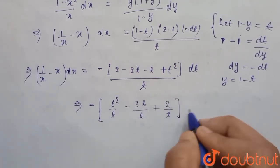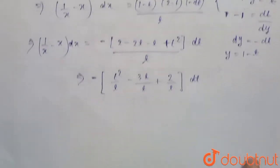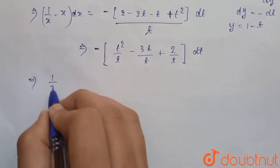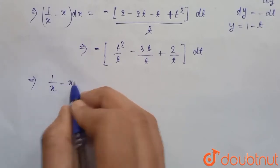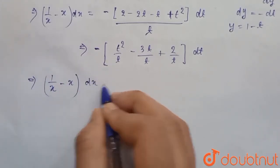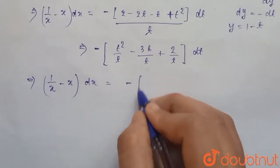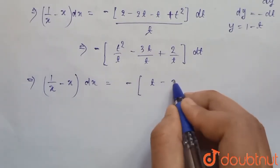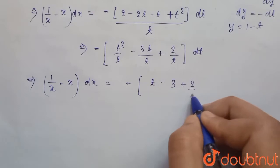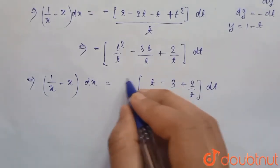Separating the fraction, we have (1/x - x) dx equals (-t - 3 + 2/t) dt. Now we integrate both sides.